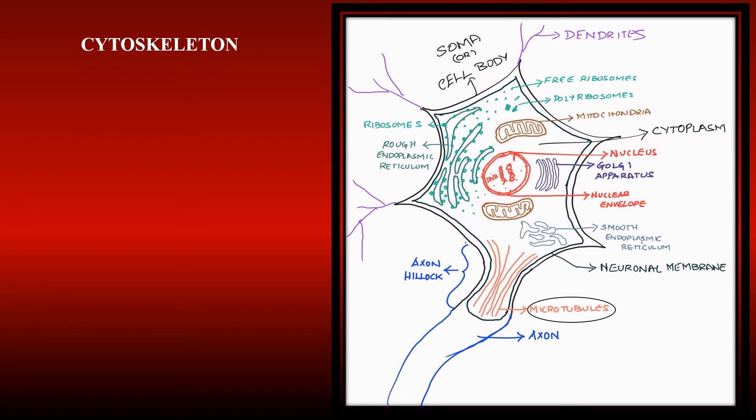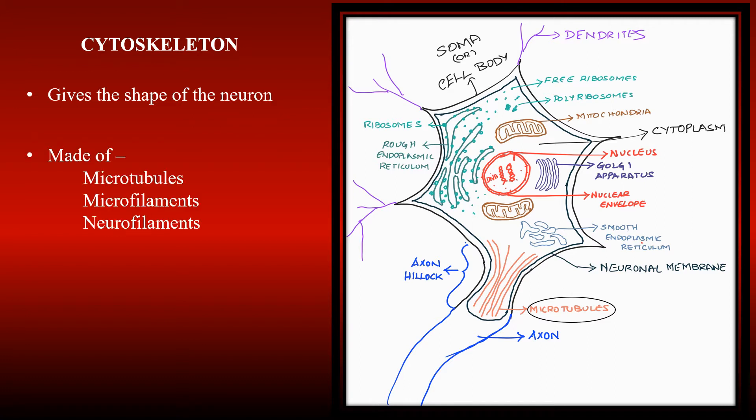The cytoskeleton gives the shape of the neuron. It is made of microtubules, microfilaments, and neurofilaments. The neurons are not static, that is, they do not lack movement. They are usually squirming around in the nervous system.